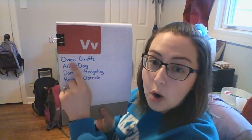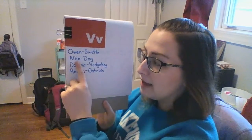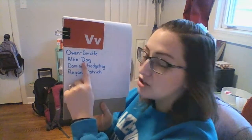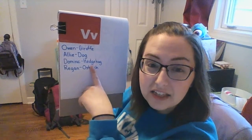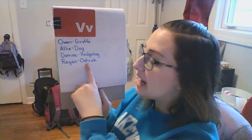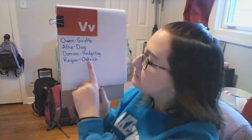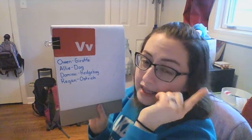All right, now we're all anticipating our animal card. So let's see what our guesses are. We have our card right here. Owen, you guessed a giraffe, but giraffe doesn't start with the letter V, but that's okay. Allie, you guessed a dog, but dog doesn't start with the letter V. Dominic, you guessed a hedgehog, but hedgehog doesn't start with the letter V. And the last one is Regan — you guessed an ostrich. I haven't heard anybody guess that one before, but ostrich doesn't start with the letter V. We didn't get any guesses with the letter V. This was kind of hard because this is the only animal I know that starts with the letter V.